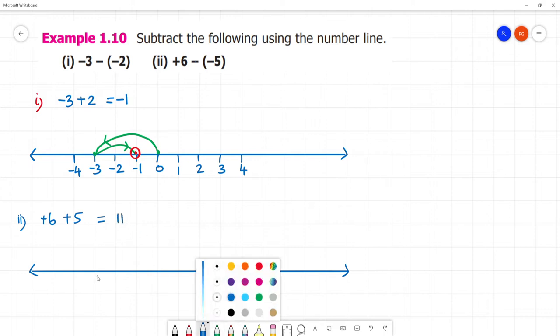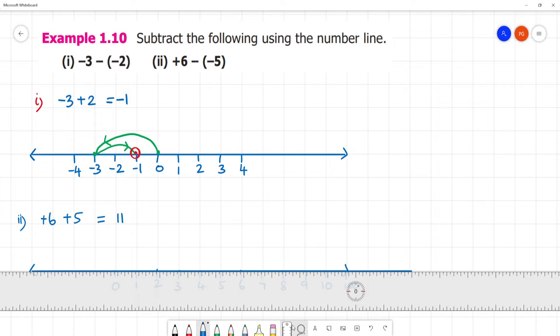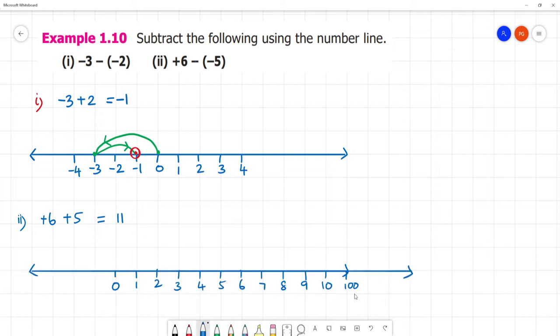This number line. First 0, then 1, 2, 3, 4, 5, 6, 7, 8, 9, 10, 11. Clear. This is 11.